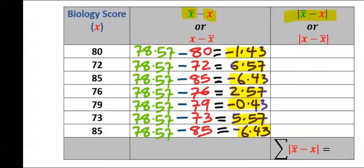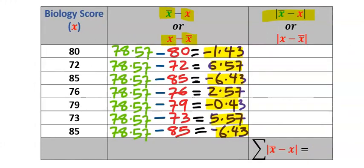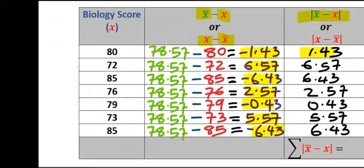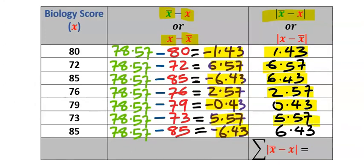If you decide to do the score minus the mean, you will still get the same answer because absolute value rejects negative. Hence, it's going to take away all the negative from each answer. Next, sum each of the absolute values. And the sum is 29.43.